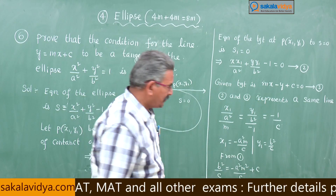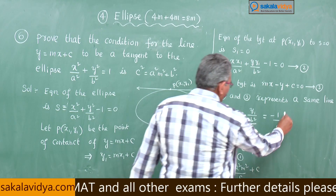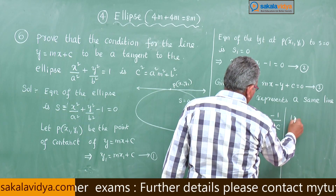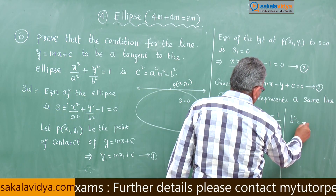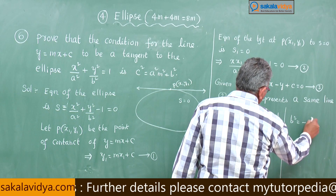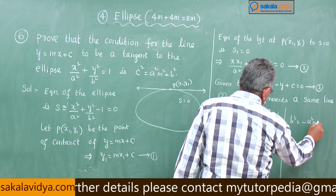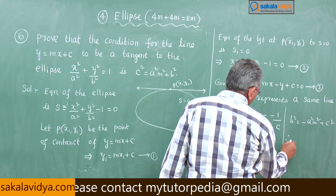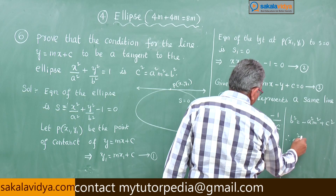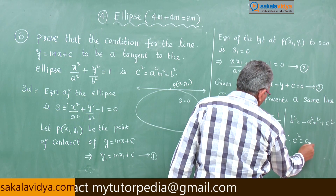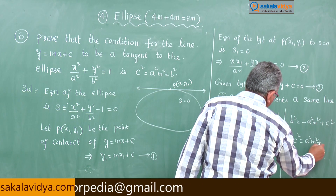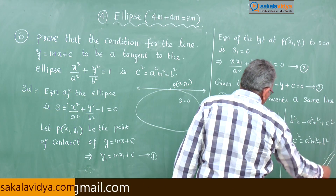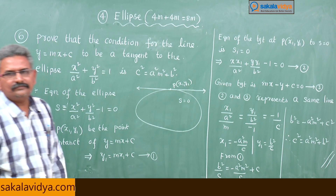Multiplying both sides by c: b² = −a²m² + c². Therefore, c² = a²m² + b². This is the required condition.